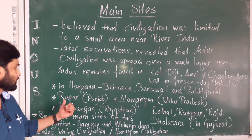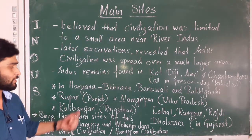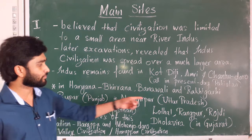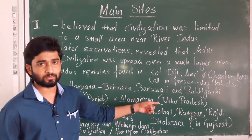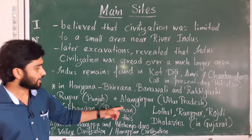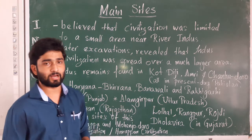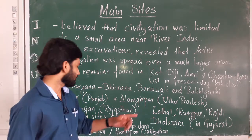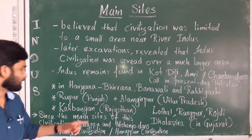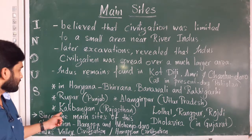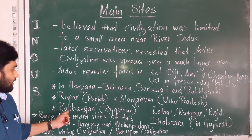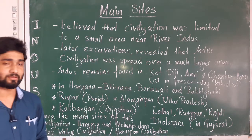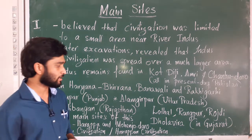The next site is in Punjab — Ropar is in Punjab. Then in Uttar Pradesh, there is Alamgirpur. And in Rajasthan, there is Kalibangan. Kalibangan is in Rajasthan.